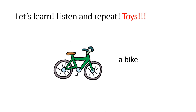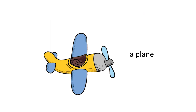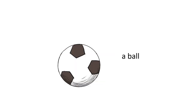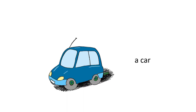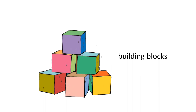Now, let's learn — listen and repeat toys. Poslušaj, ponovi — igračke. A bike. A skateboard. A plane. A teddy bear. A ball. A car. A kite. Building blocks.